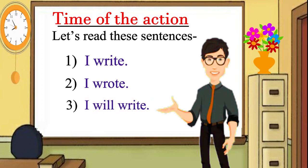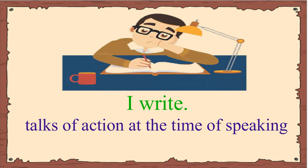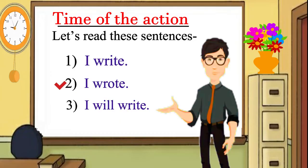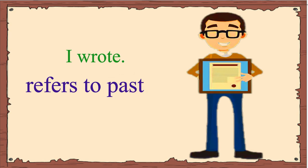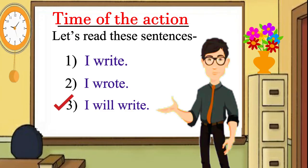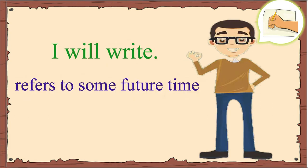It can easily be seen that the first sentence is talking about the present time, that is the time of speaking. The second sentence, I wrote, refers to past. And the third sentence, I will write, refers to some future time when the speaker will write.